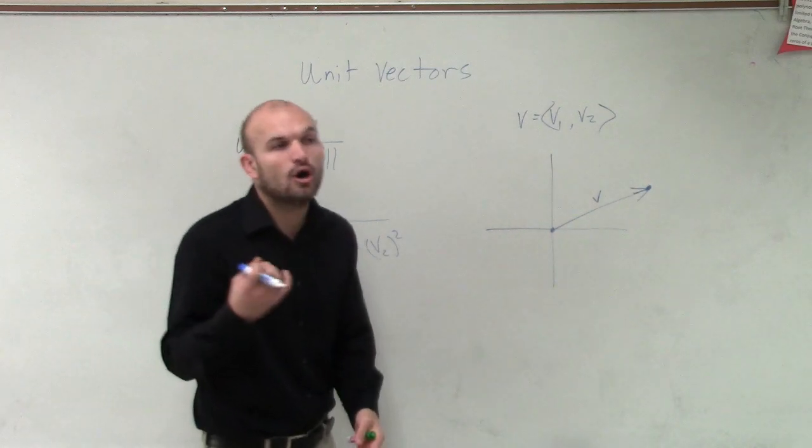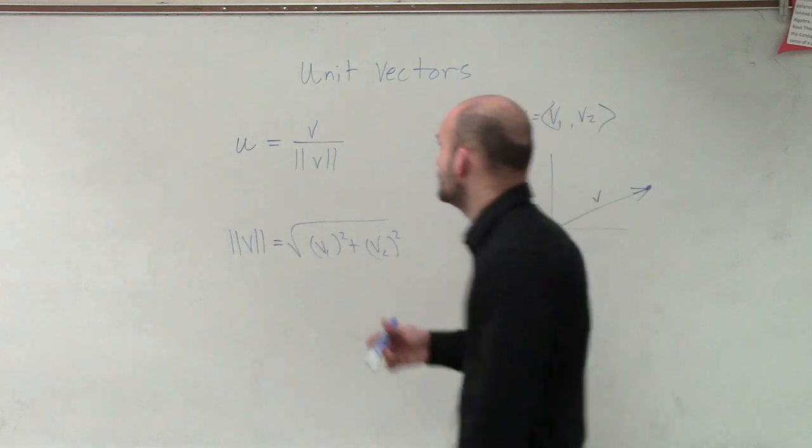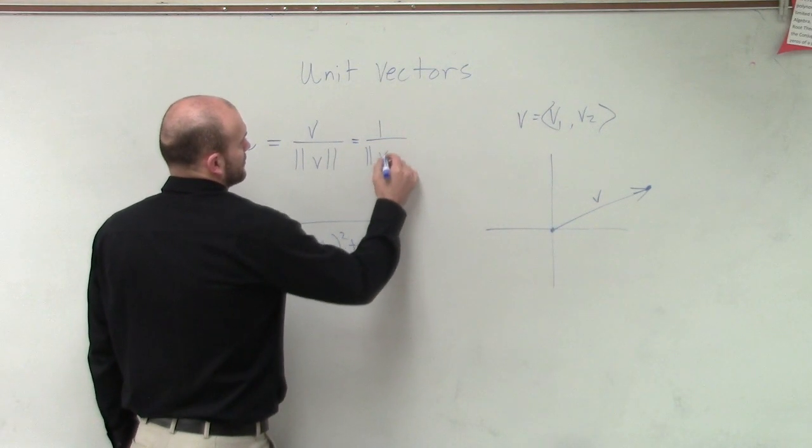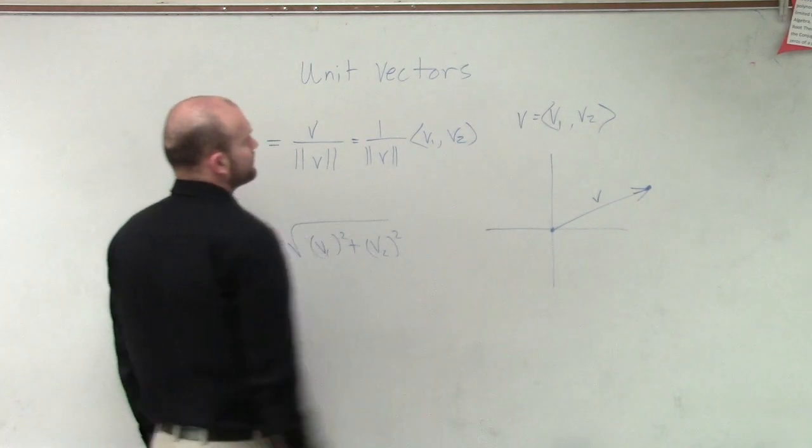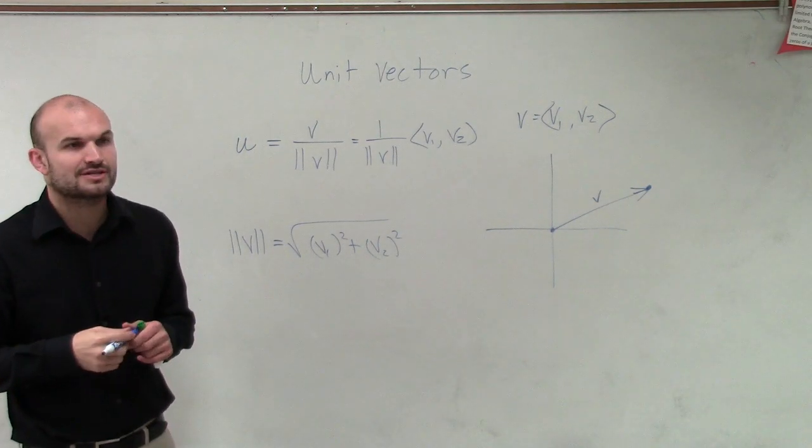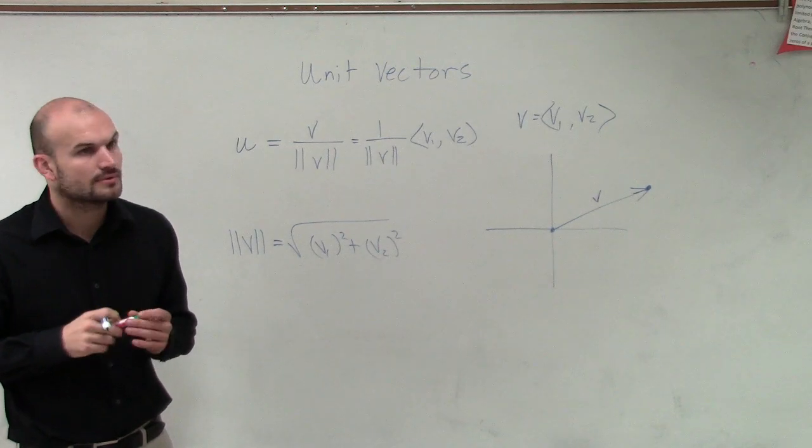And a unit vector always has a magnitude of 1. So a lot of times, we just like to write this like this. And we'll go through some examples when we're actually given a vector and how that would look.